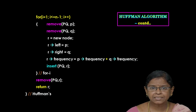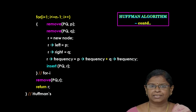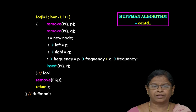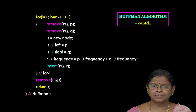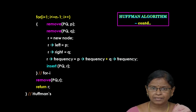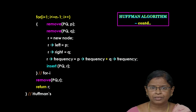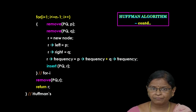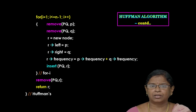The new node is inserted into the priority queue, following the ordering procedure from lowest frequency to highest frequency. This process of removing the first two nodes, creating the new node, and inserting it into the priority queue is repeated n minus 1 times. When the priority queue consists of only one node, it is the Huffman tree. After the for loop is over, we remove that node from the priority queue and return it to the calling procedure.